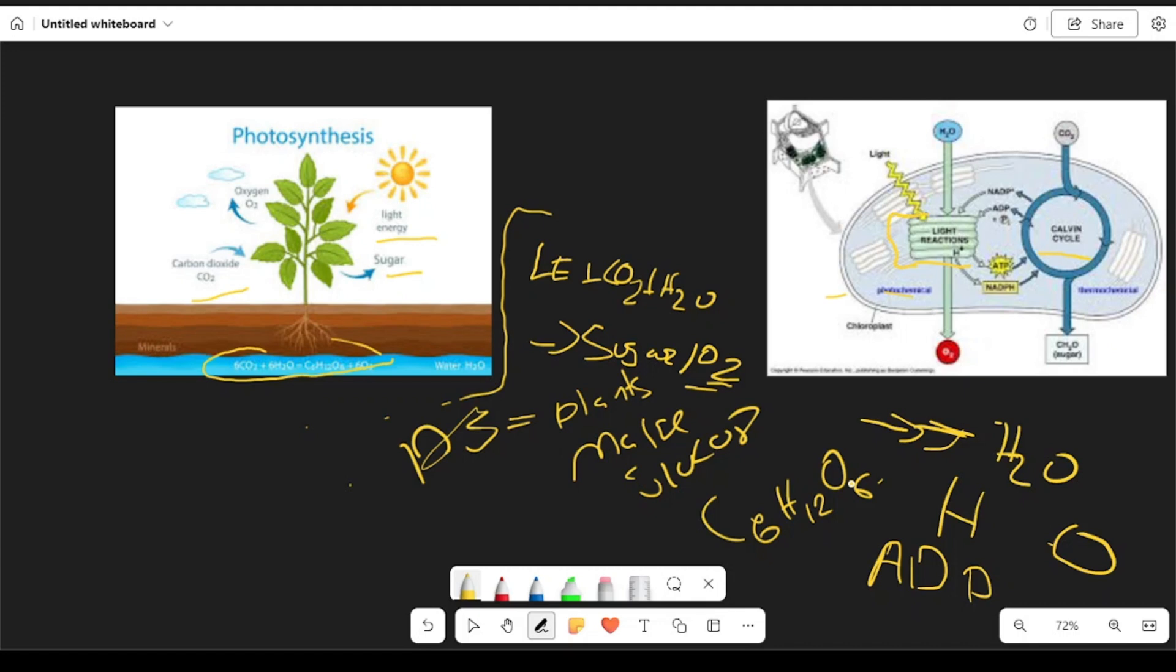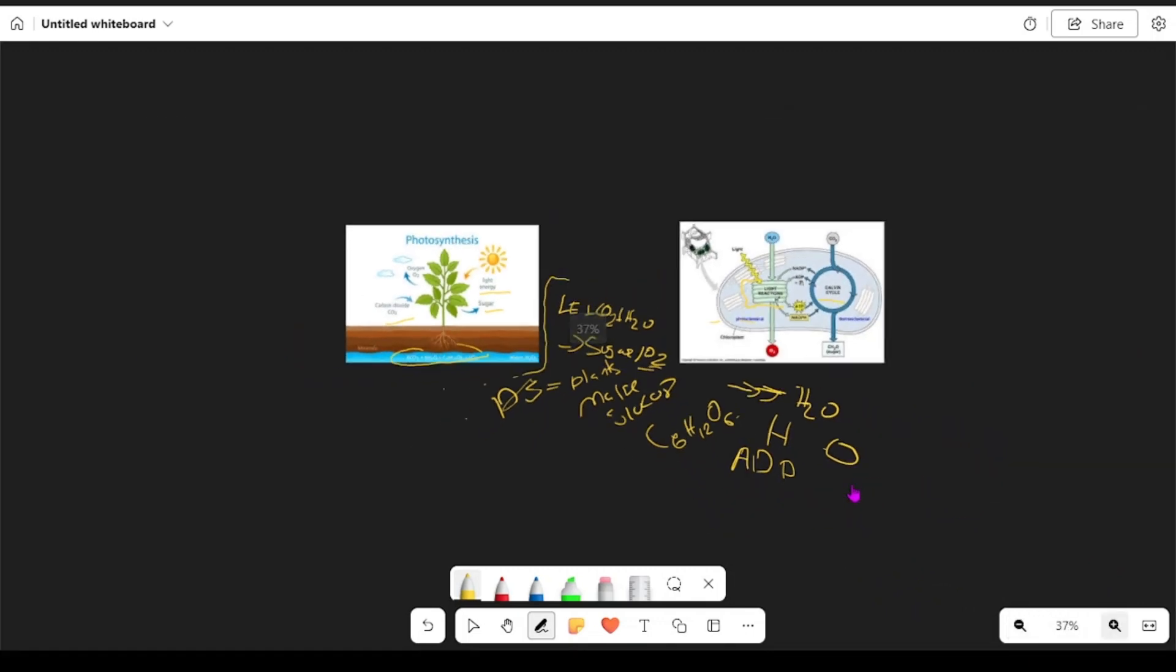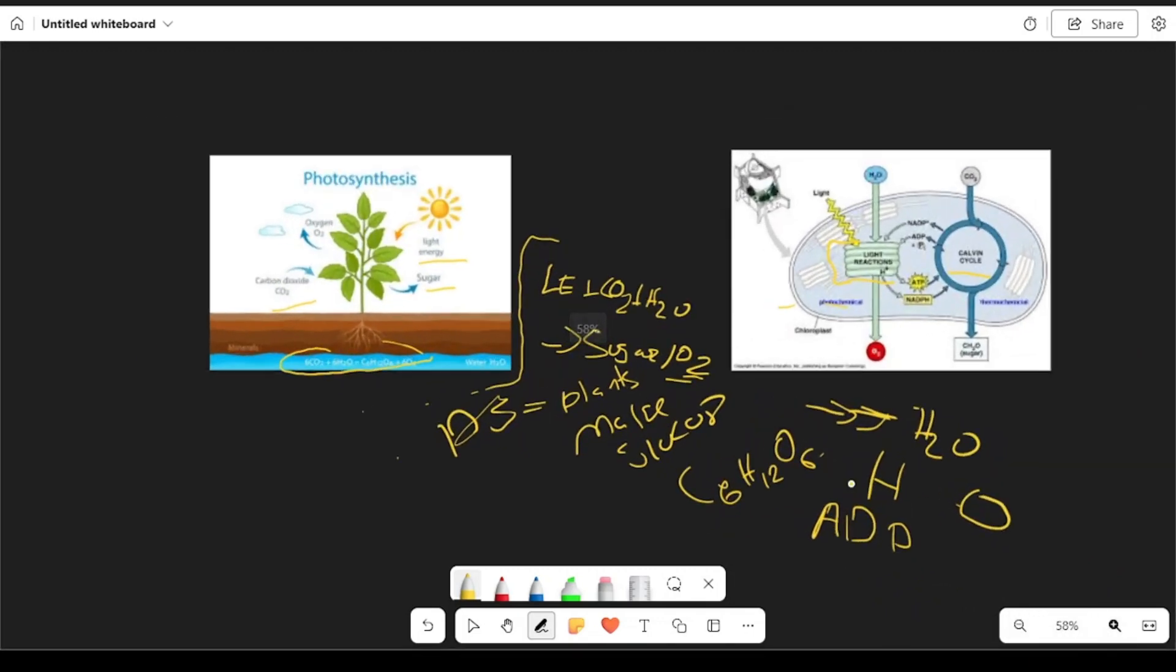ADP resides inside the thylakoids. We can see ADP as like an uncharged battery - it's pretty useless and doesn't have many uses. But ATP, on the other hand, is a charged battery and has plenty of uses. How does the light reaction make ADP go to ATP?